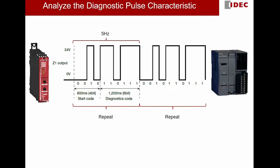One last important characteristic of this diagnostic pulse is the pulse width. The pulse width of the diagnostic pulse coming out from Z-1 terminal is actually 200 ms. If 10 bits require 2 seconds, then 2 seconds divided by 10 bits means 1 bit is 200 ms. This is very important because later on we will do sampling at the middle of the pulse width.